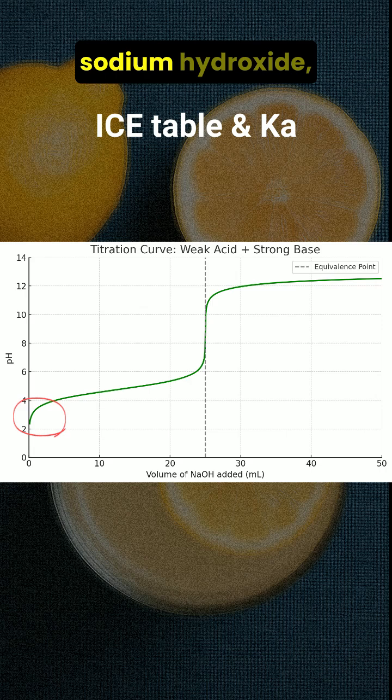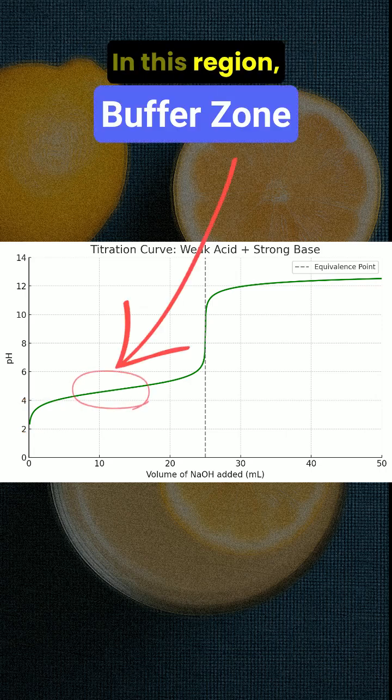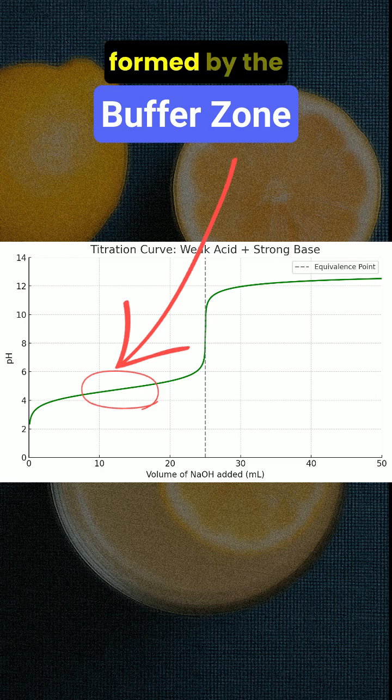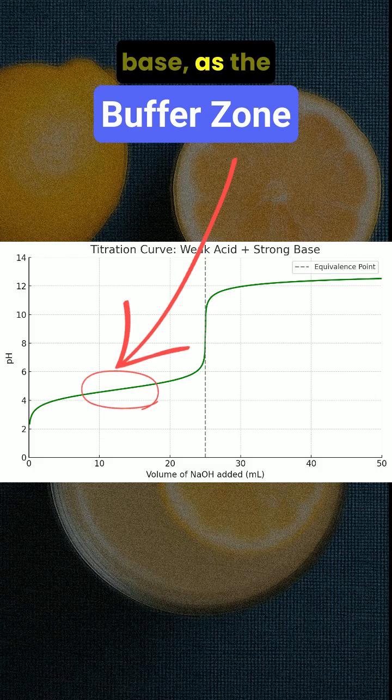As we begin adding sodium hydroxide we enter the buffer region. In this region the pH increases gradually because the solution resists drastic changes in pH. The buffer is formed by the presence of both the weak acid and its conjugate base as the strong base begins to neutralize the acid.